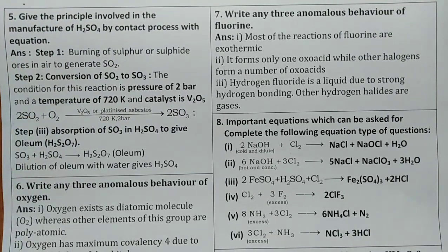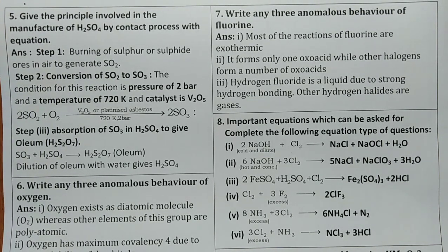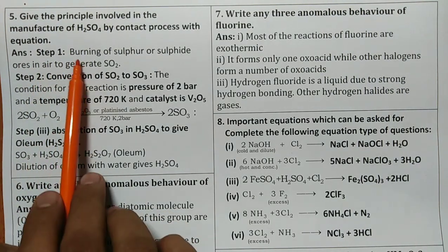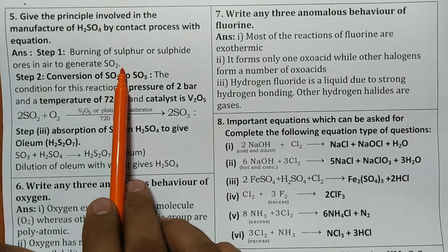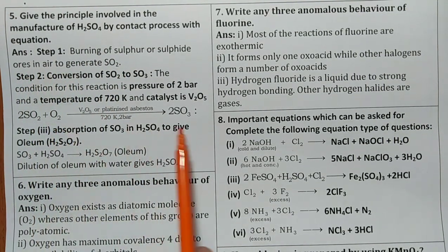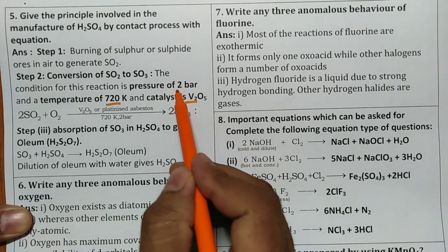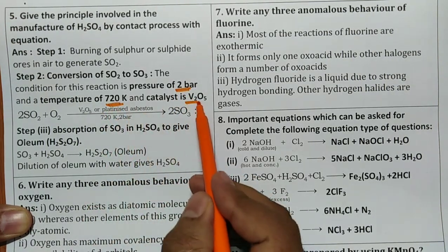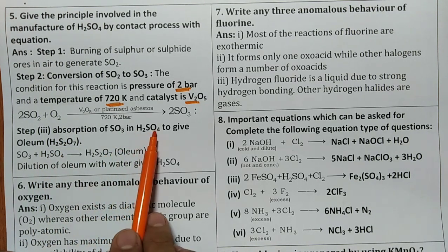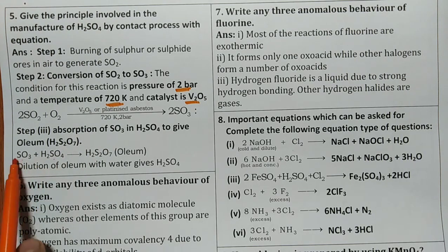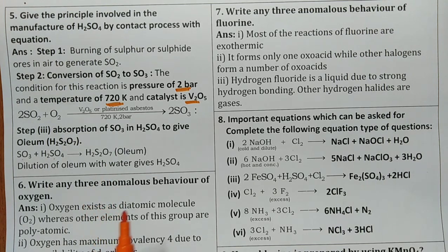Give the principle involved in the manufacture of sulfuric acid by contact process with the equation. Very simple flow chart. Generally step one, step two, step three. Step one is burning of sulfur or sulfide ores to form SO2. Second step is SO2 with catalyst V2O5. Absorption of SO3 in H2SO4. Third step SO3 in H2SO4 is going to absorb to form H2S2O7. That is oleum is going to form. So this is about manufacture of sulfuric acid.